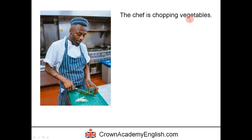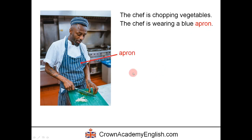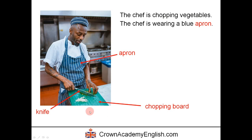The chef is chopping vegetables with his knife. The chef is wearing a blue apron — an apron protects his clothes and keeps them clean. He is holding a knife and using it to chop vegetables. The vegetables are on a chopping board.